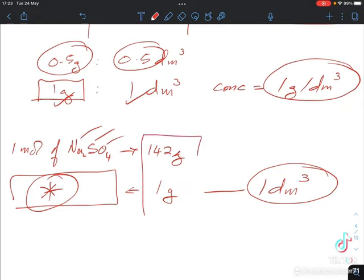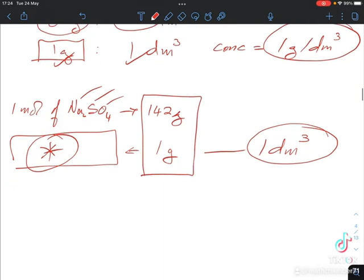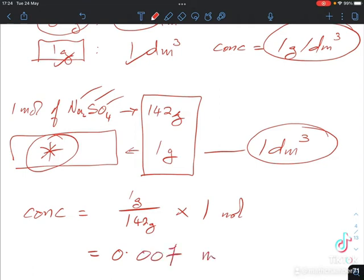That means the concentration in terms of mole per cubic decimeter will be 1 gram divided by 142 gram multiplied by 1 mole. That will give you 0.007 mole per cubic decimeter.